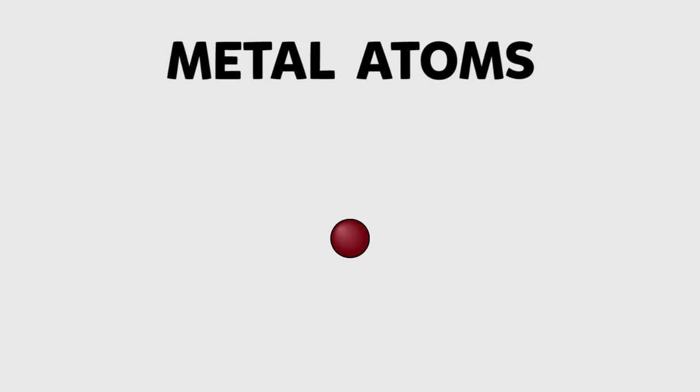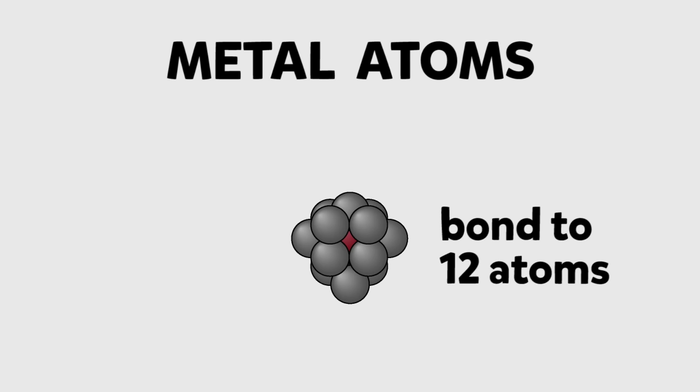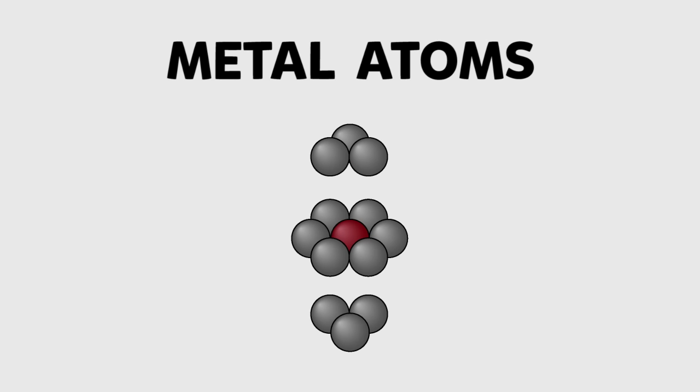Each metal atom can bond with up to 12 others in a close packed lattice. Look at the red atom. It is surrounded by six in its plane and three on top and three underneath.